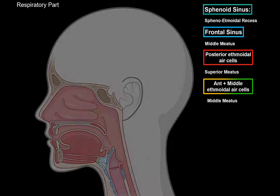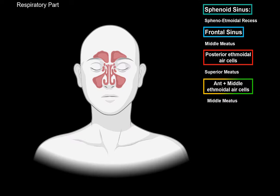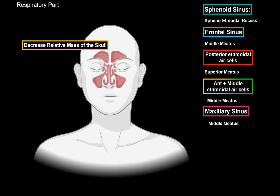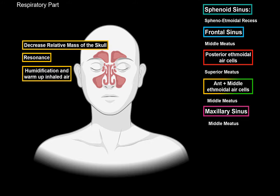If you look at the anterior view of the sinuses, you will see another sinus which was not visible in the lateral view — and this one is the maxillary sinus, which drains into the middle meatus. Now why do we have these sinuses? Well, your skull is pretty heavy, and since these sinuses are relative cavities, they are thought to decrease the relative mass of the skull, as well as help resonating the sound as you speak. Since they are lined with mucus with a lot of blood, they will also help warm up the air and humidify it as it goes further down the respiratory system.